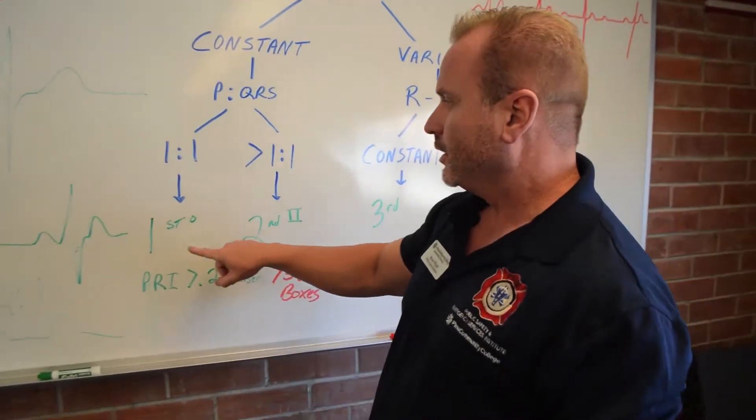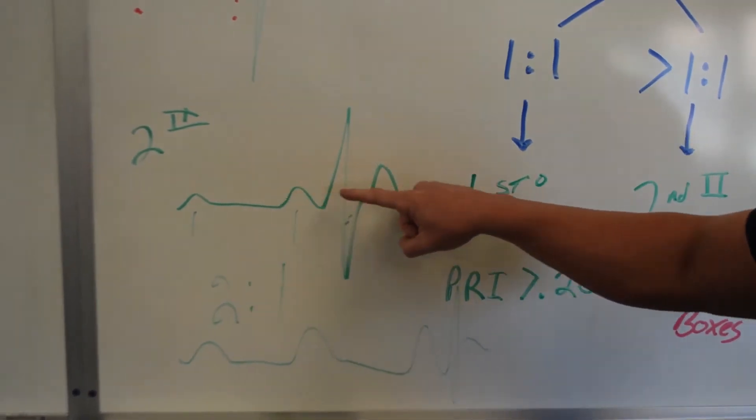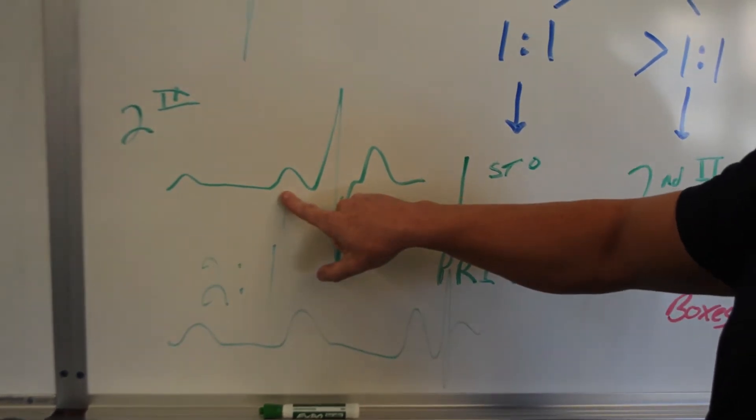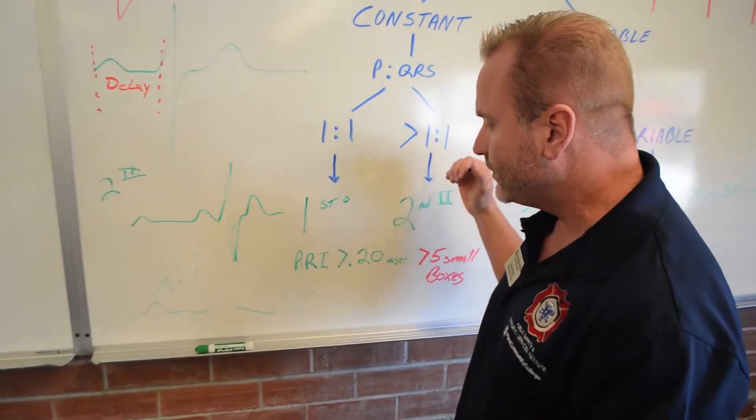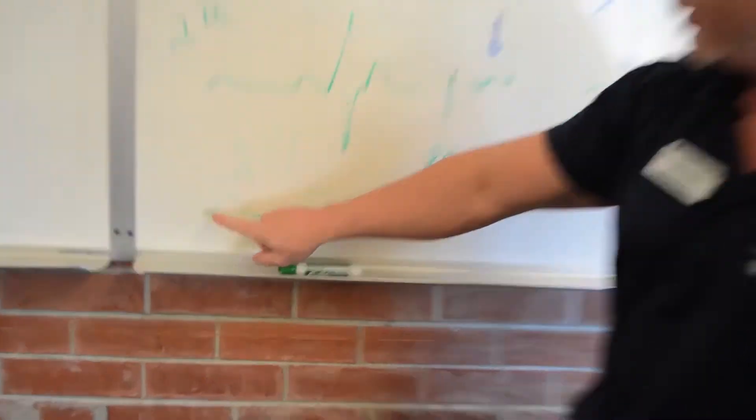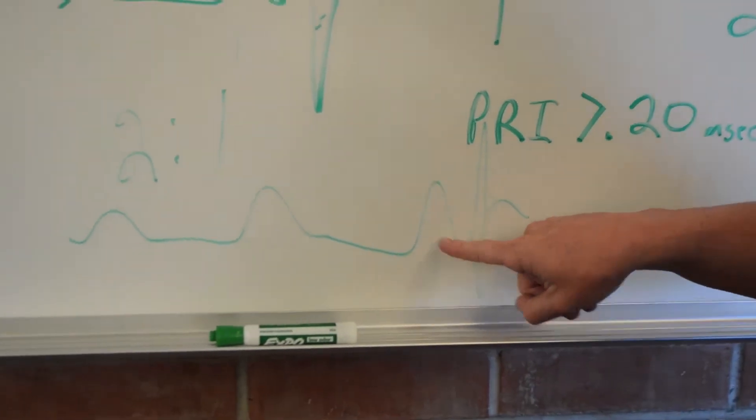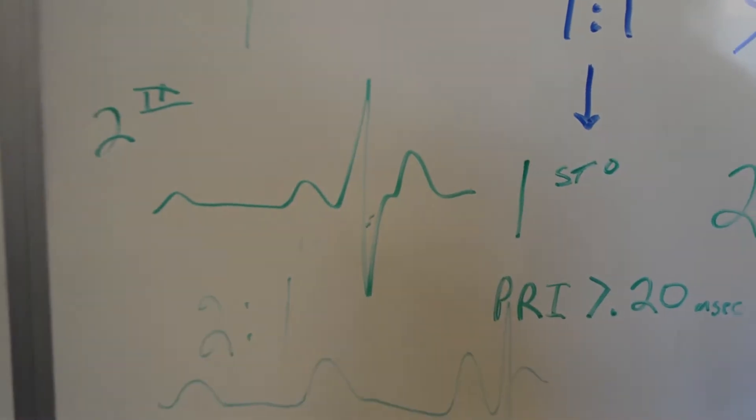So what does that look like? This is what it looks like. I have usually a normal complex. It'll keep going left to right. And then I'll have a rogue P wave. I'll have a normal complex. I'll have a rogue P wave. And this is cyclical. This just keeps going on. Or I could have a P wave, a P wave and a normal QRS complex. This would be a three to one conduction. This would be a two to one conduction.